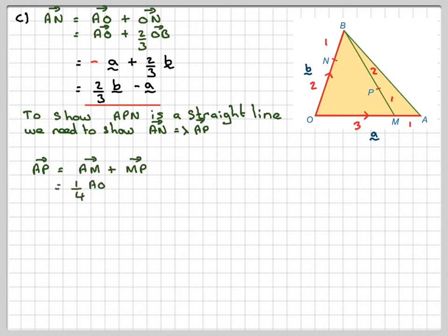Now A to M is one quarter of AO plus MP. One quarter of AO is minus a quarter of a—minus because you're going against the arrow. And in a previous part, we calculated in part B what MP was, which is one third of b minus one quarter of a. So collecting like terms up, that's going to give one third of b minus two over four, which is a half of a.